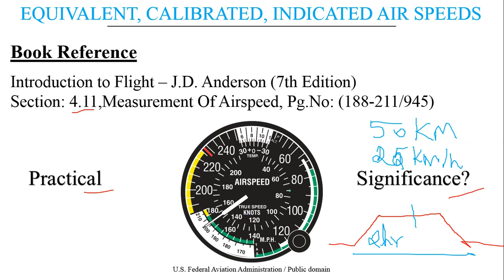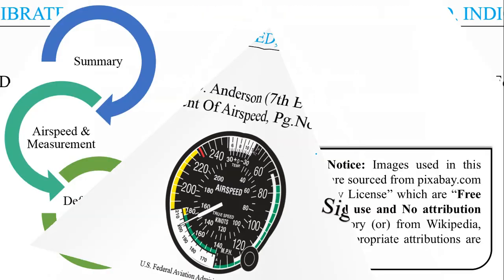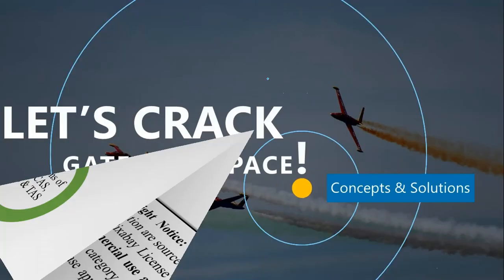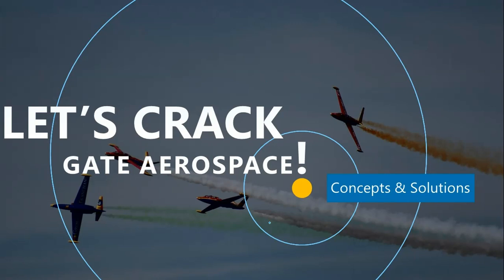There are further considerations such as the green limit (optimized speed range), yellow limit (safe range), and red limit (extreme limit of speed which must not be exceeded). That's it for this session — we covered airspeed measurement techniques, types of airspeed and their definitions, and the formulas for indicated, equivalent, and true airspeed. Thank you, let's crack GATE Aerospace!